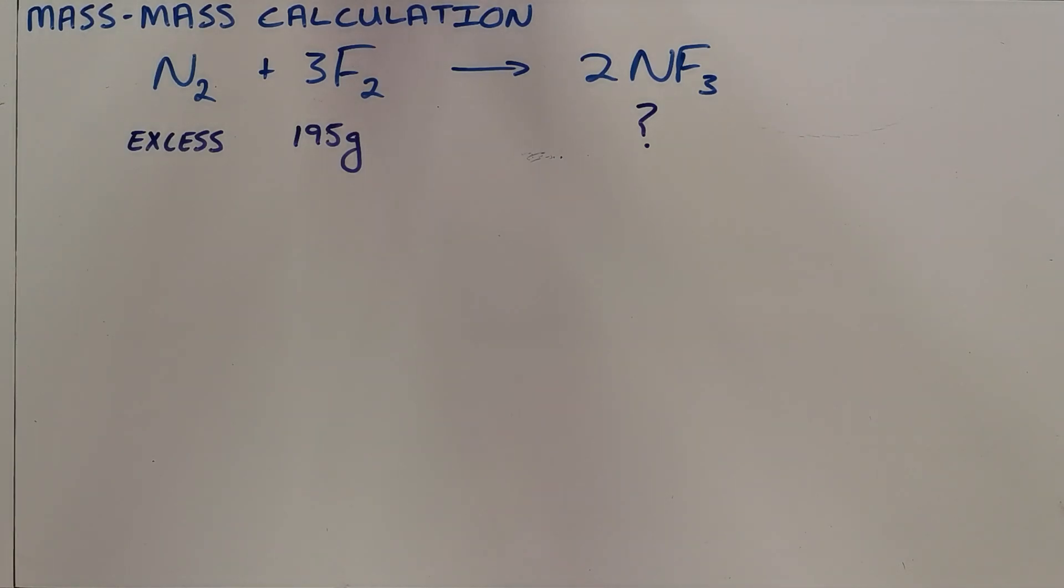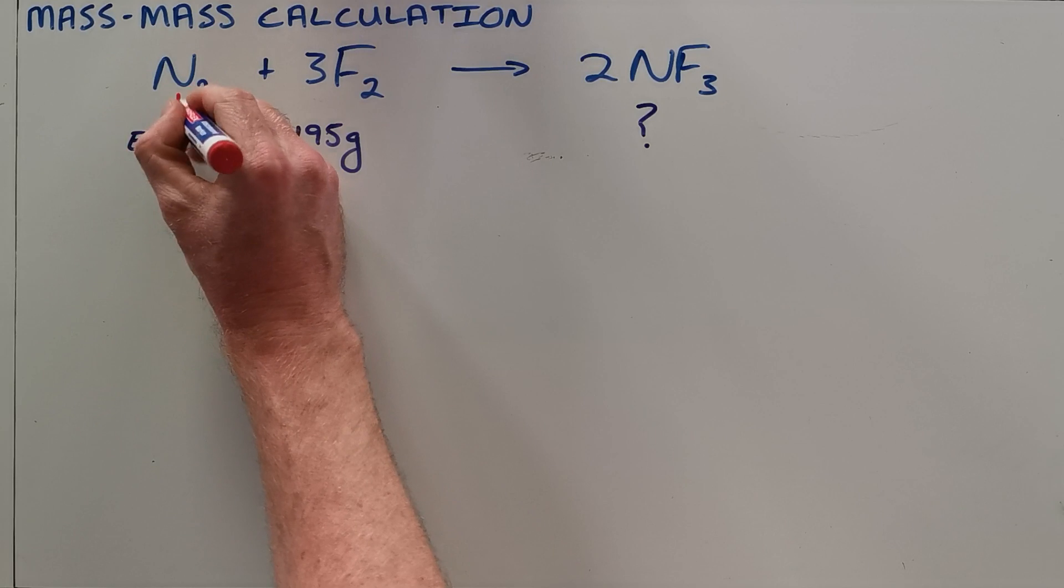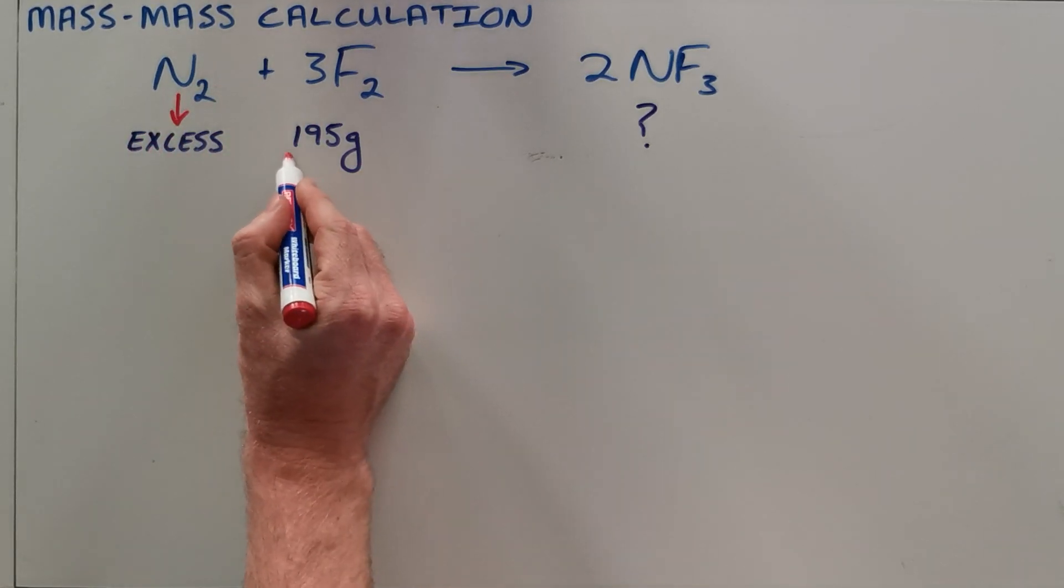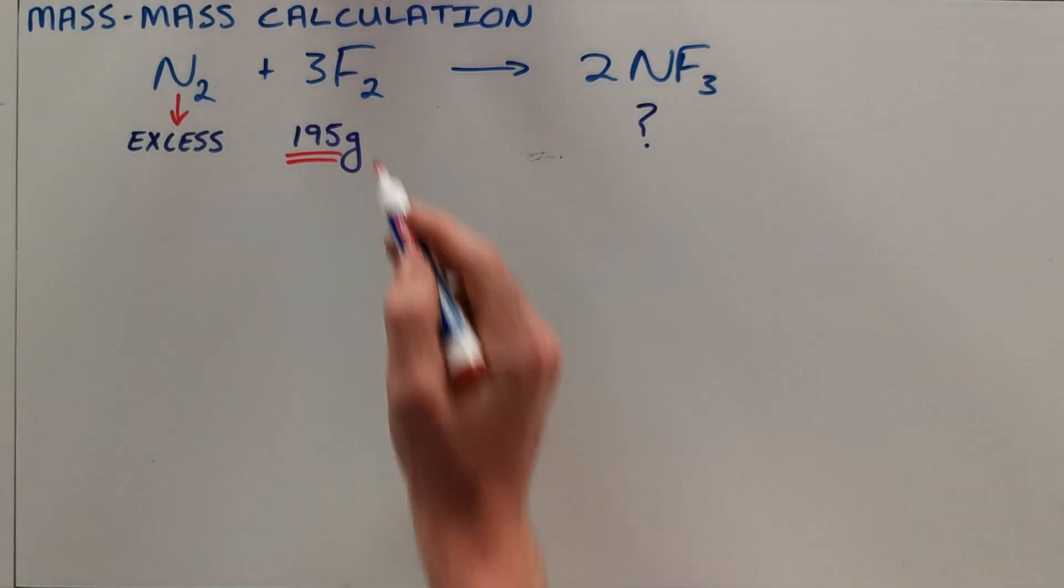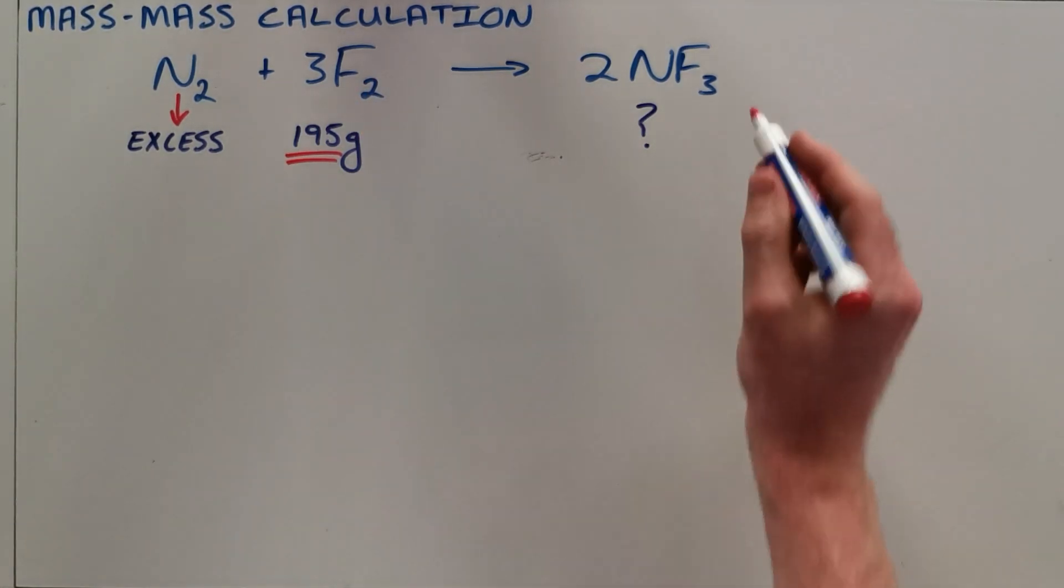I've got here a typical example of a mass-mass calculation in stoichiometry where you are given the balanced equation. You are told that one of your reactants, in this case nitrogen, is in excess, meaning there's more than enough of it. We start out with 195 grams of fluorine present, and the question asks what mass